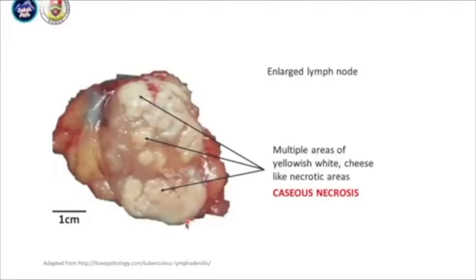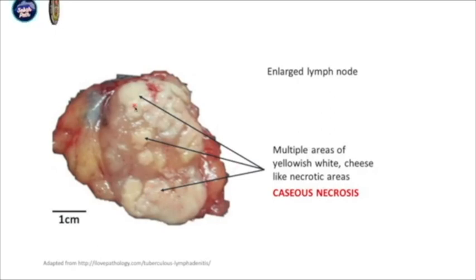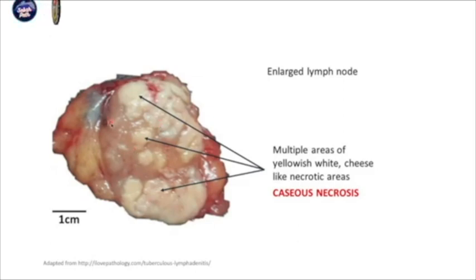We go to the first case. In the gross section, you can see the lymph node is significantly larger — about 5 cm. And you can see there are multiple yellowish areas. Usually when you palpate it, it is a bit soft and cheesy, like this necrotic area, which we call caseous necrosis. This is the characteristic here. Usually in this lymph node, it doesn't affect the whole lymph node — there are some areas which are preserved, and this area is affected by the caseous necrosis.